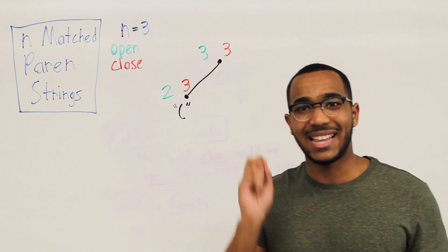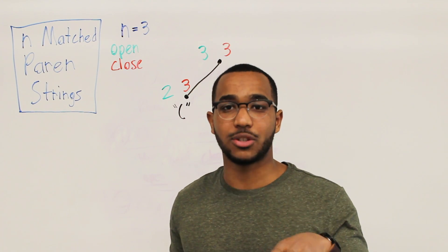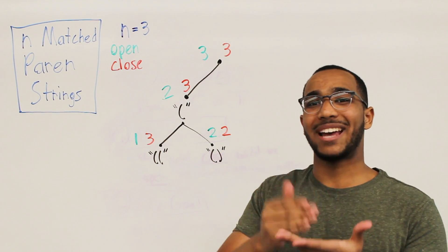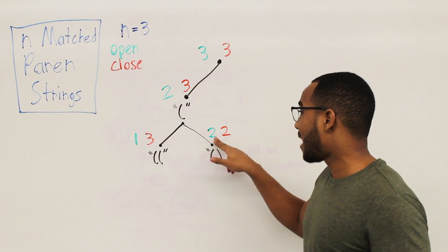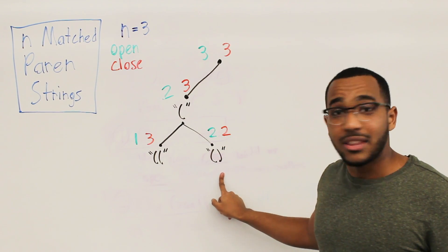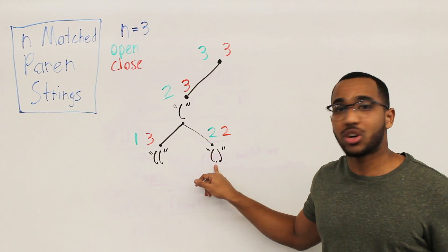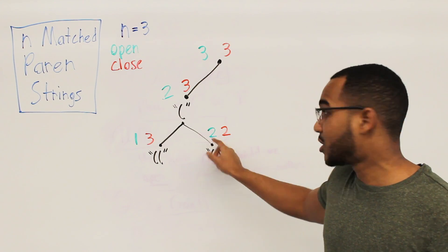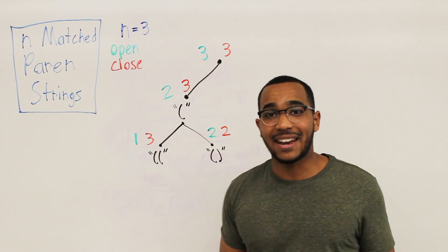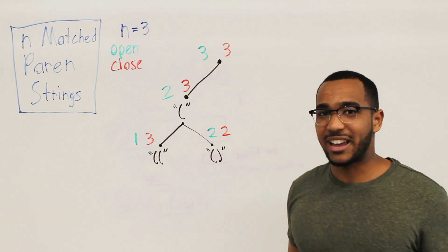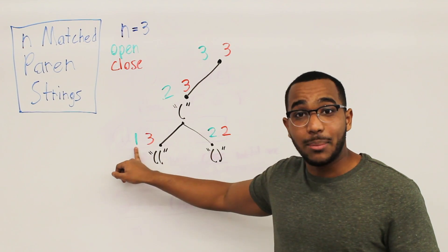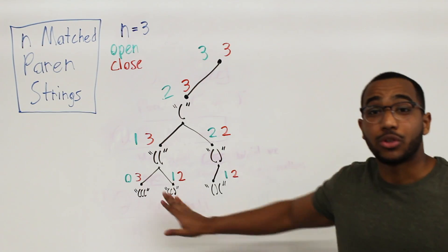From here, can I open a bracket? Yes. Can I close a bracket? Yes — the amount of left brackets is less than the amount of right brackets left to use, so there is a left bracket I can close. I can make two choices here: open or close. Let's express both. Going down the open-bracket path, we have one less left bracket to use but still have three right brackets. Going down the close path, we used a right bracket and closed our left.